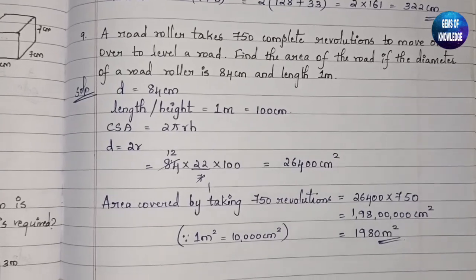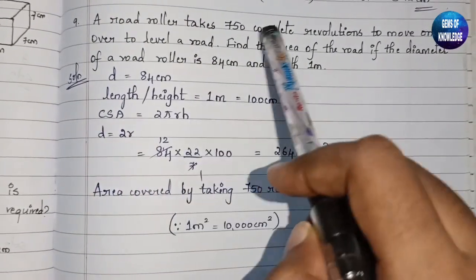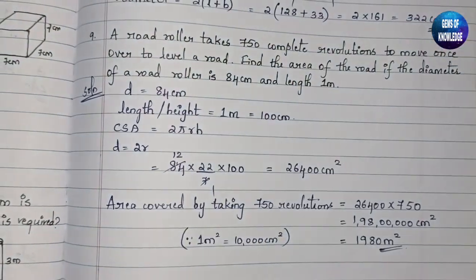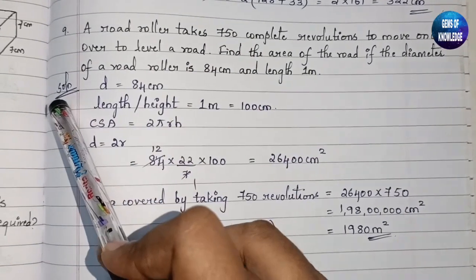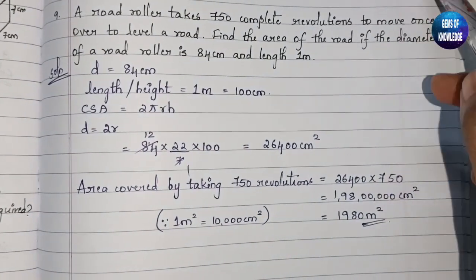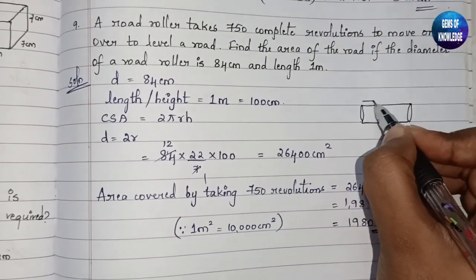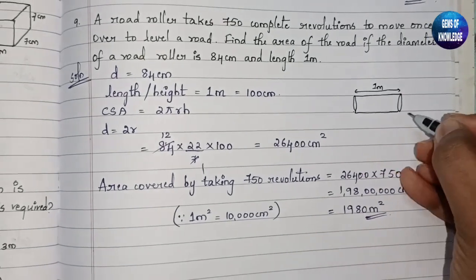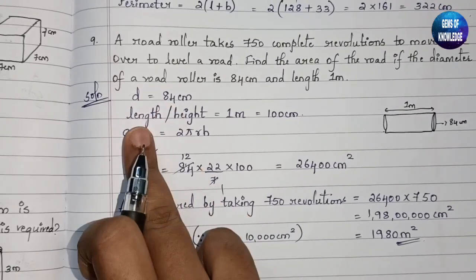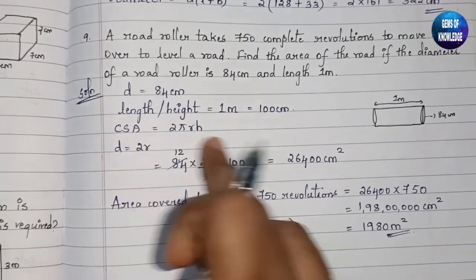Question 9: a road roller takes 750 complete revolutions to level a road. The roller is cylindrical — it revolves 750 times to level the road. Find the area of the road. Diameter of the road roller is 84 cm and length is 1 meter = 100 cm. So d = 84 cm and h = 100 cm.